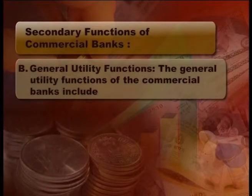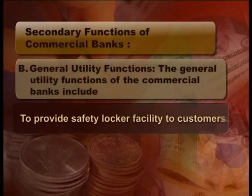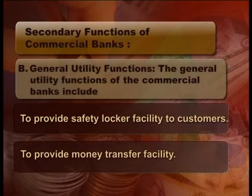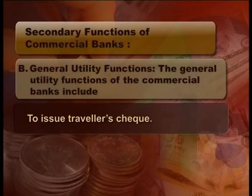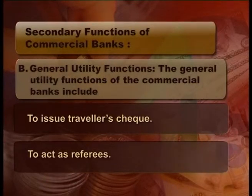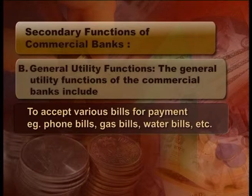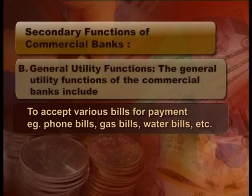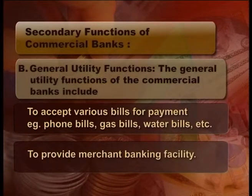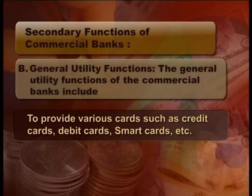General utility functions of the commercial bank include: to provide safety locker facility to customers; to provide money transfer facility; to issue travelers' checks; to act as referees; to accept various bills for payment, e.g., phone bills, gas bills, water bills, etc.; to provide merchant banking facility; and to provide various cards such as credit cards, debit cards, smart cards, etc.